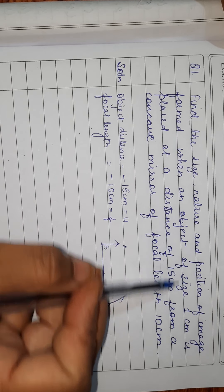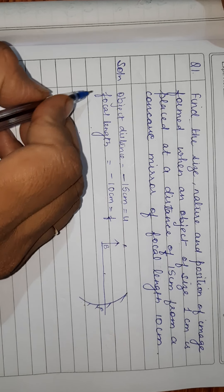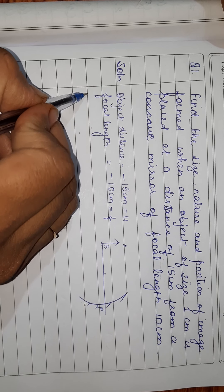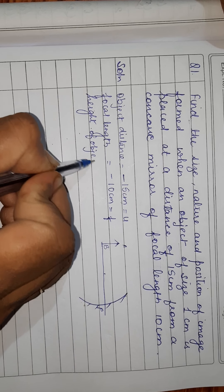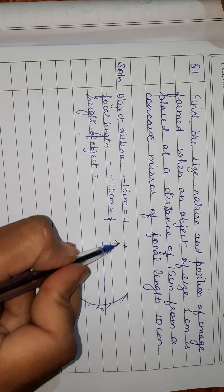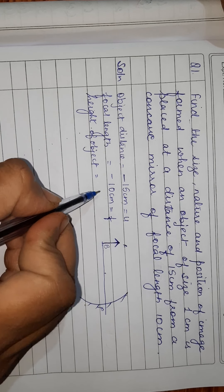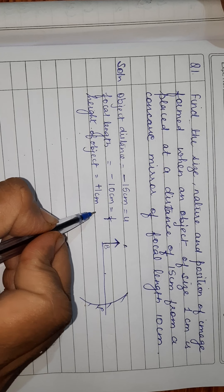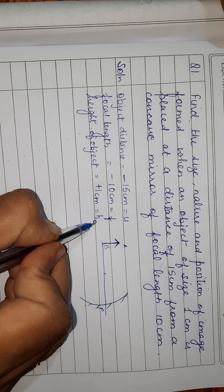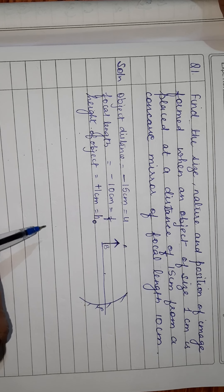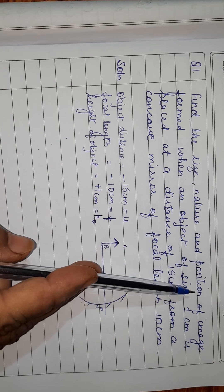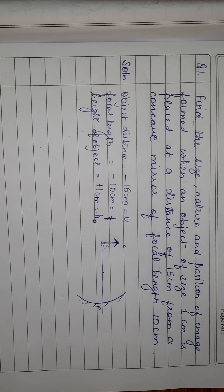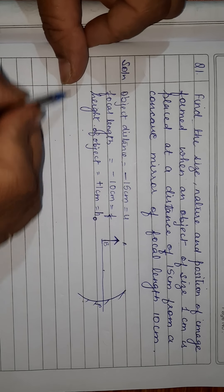One more thing given is the size, meaning height of object. We always keep the object upright, so it is positive: H-object is plus 1 centimeter. Now what we have to find is the size, nature, and position of image. We will use the mirror formula.